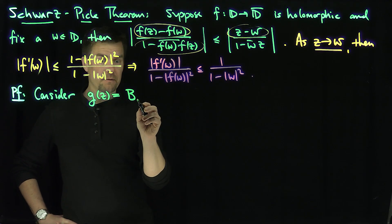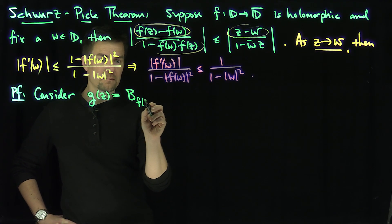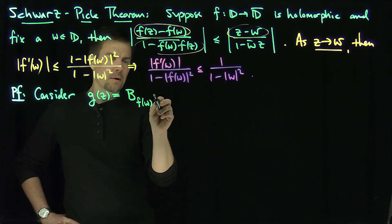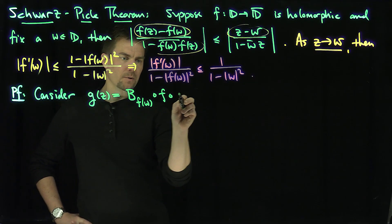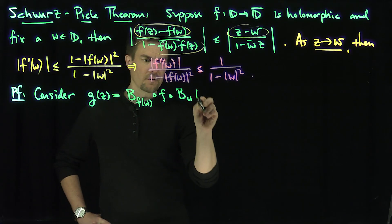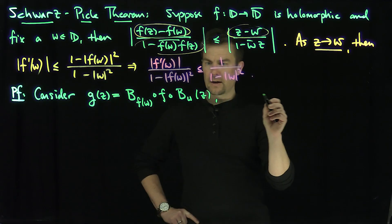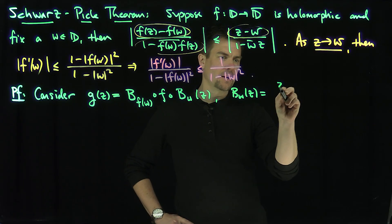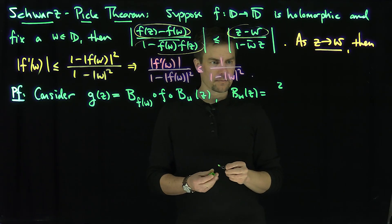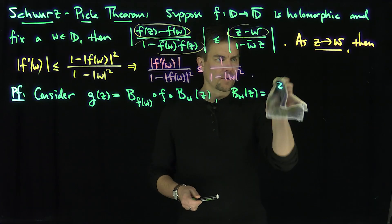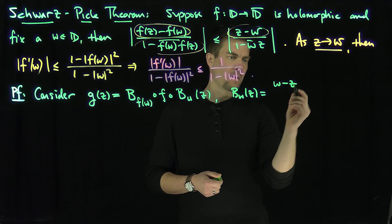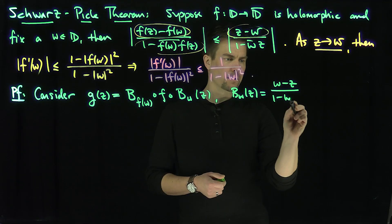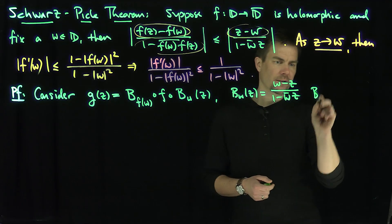B of f(w) composed with f composed with B_w(z), where B_w(z) is just our Blaschke factor: w minus z over 1 minus w bar z is our Blaschke factor.